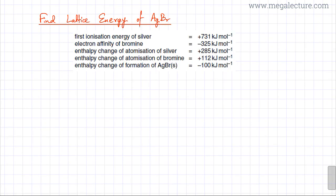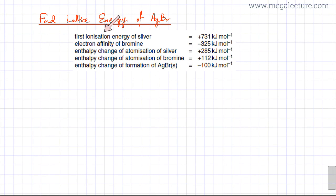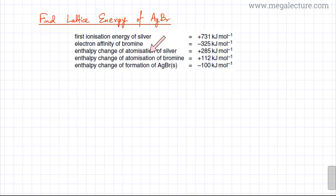In this question we're going to find the lattice energy of AgBr by drawing a Born-Haber cycle. Some information is already provided: the first ionization energy of silver is 731, the electron affinity of bromine is minus 325, the enthalpy change of atomization of silver, the enthalpy change of atomization of bromine, and the enthalpy change of formation of AgBr.